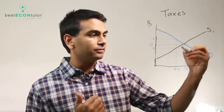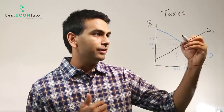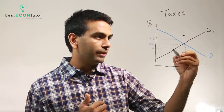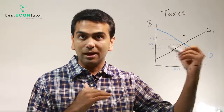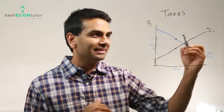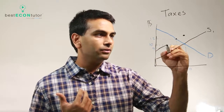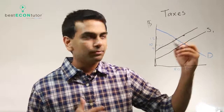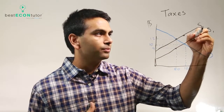Every single point shifts up by the tax amount. For example, the point (100, 10) is now going to become (100, 13). The point (80, 9) is now going to be (80, 12), because nine plus the three dollar tax equals twelve. As long as you make two points, that's enough to draw the new supply curve, but you can move every given point if you want. This is the new supply curve with the tax.